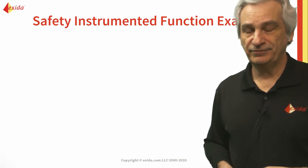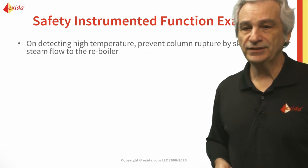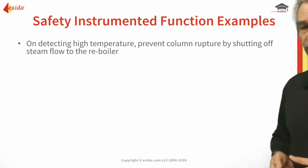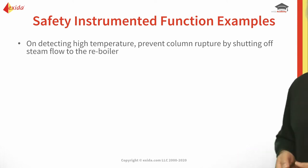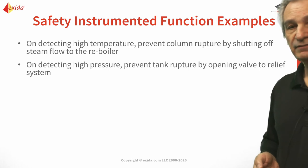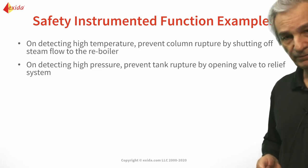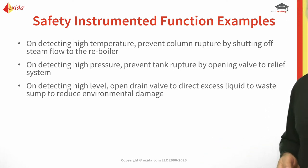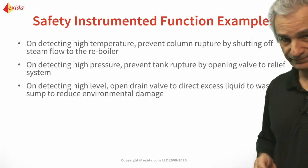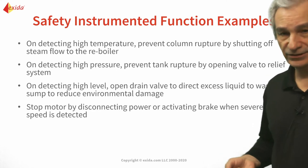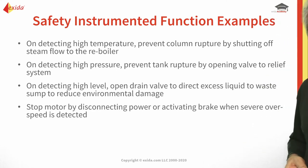Examples of safety instrumented functions: On detecting high temperature, we want to prevent column rupture by shutting off the steam flow to the reboiler. On detecting high pressure, we want to prevent tank rupture by opening the valve to the relief system. On detecting high level, we open the drain valve to direct excess liquid to a waste sump to reduce environmental damage — so that's a level protection function.